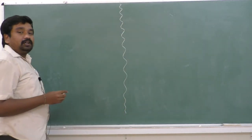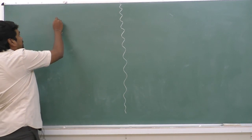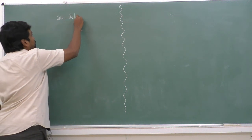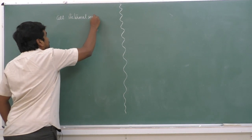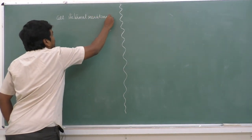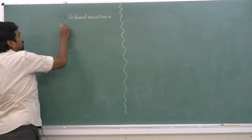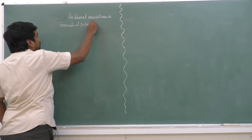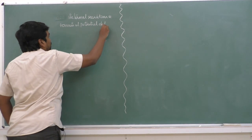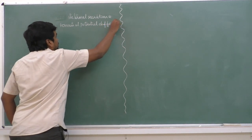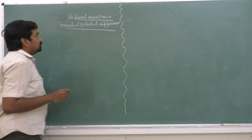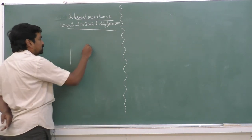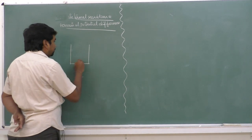In this session, let us discuss about the cell. Yesterday we discussed about the cell; today we are discussing about internal resistance and terminal potential difference. So now let us draw the diagram of the cell — this is an electrolytic cell.